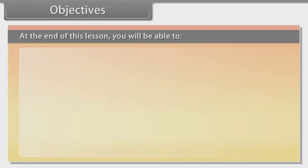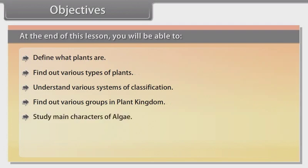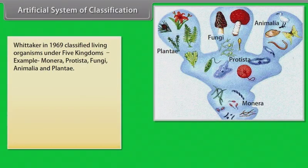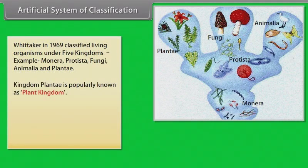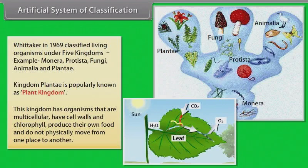At the end of this lesson, you'll be able to define what plants are, find out various types of plants, understand various systems of classification, find out various groups in plant kingdom, and do not physically move from one place to another.